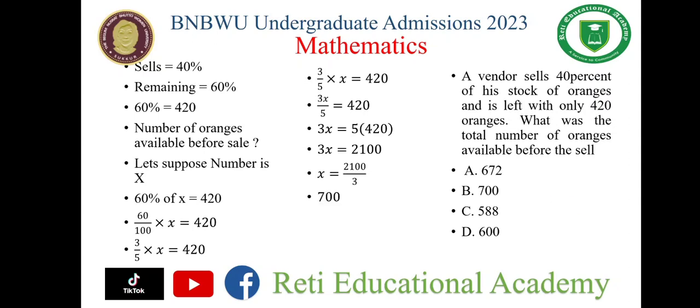So the answer is 700. 60% of X equals 420, therefore X is 700. That is the total number of oranges before the sale.